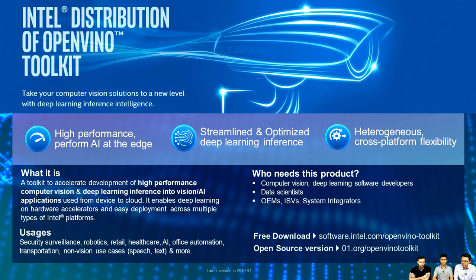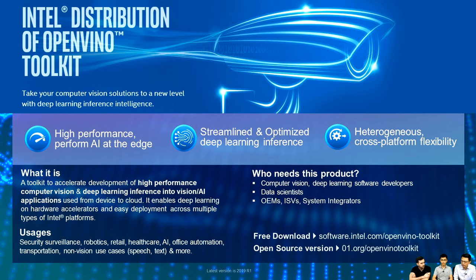OpenVINO has three key focuses. First, it can drive high performance and perform AI applications at the edge. Second, it has optimized deep learning inference — you can do any kind of deep learning inference with OpenVINO toolkit. Third, it supports heterogeneous platforms: you can distribute workloads on CPU and also on the FPGA side. Basically, OpenVINO is a software toolkit to accelerate computer vision and deep learning inference on your platform.